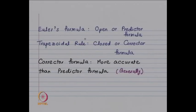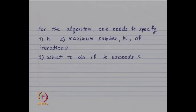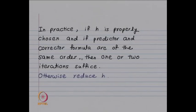Euler's formula is the open or predictor formula; the trapezoidal rule is the closed or corrector formula. Generally, the corrector formula is more accurate than the predictor. For this algorithm, we need to specify h, the maximum number of iterations, and what to do if k exceeds K. In general, only one or two iterations are needed; otherwise, reduce h and continue. We have considered one predictor-corrector formula, and now we can use this idea to define other predictor-corrector formulae.